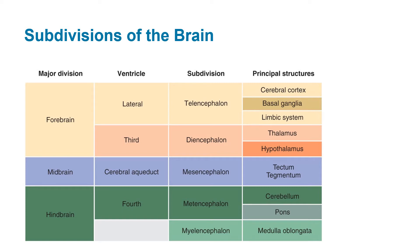Let's break the brain down into sub parts. The three major divisions are the forebrain, the midbrain, and the hindbrain. We can look at what ventricles are in each part. In the forebrain you have the lateral ventricles, equivalent to the first and second, and the third ventricle. In the midbrain you've got the cerebral aqueduct, and in the hindbrain you've got the fourth ventricle.